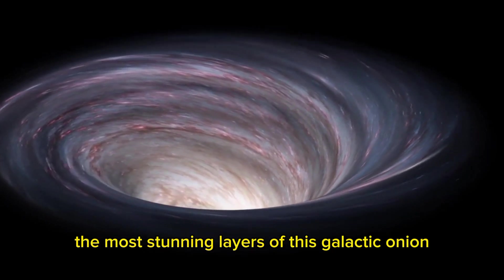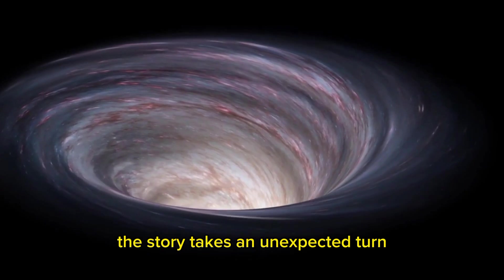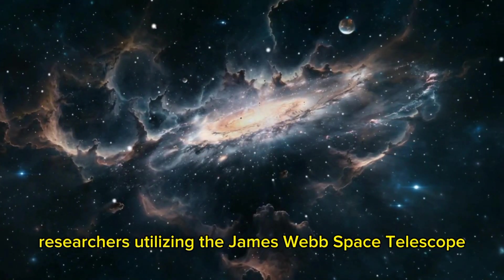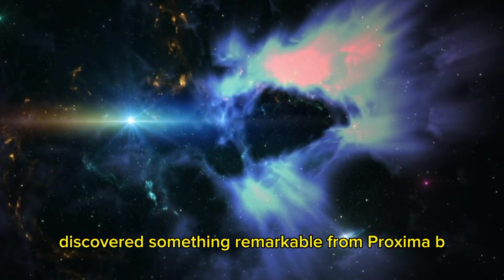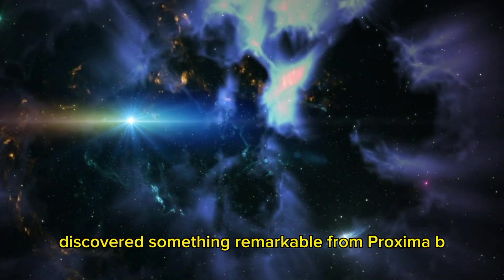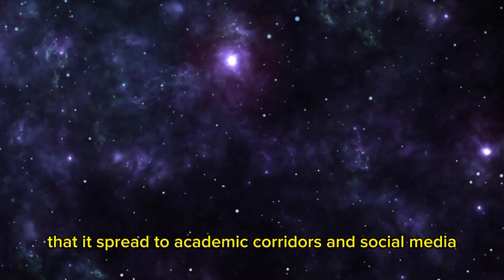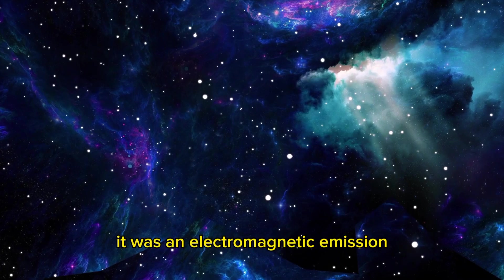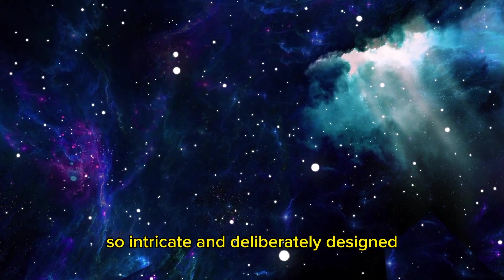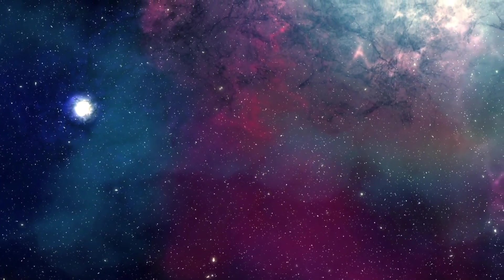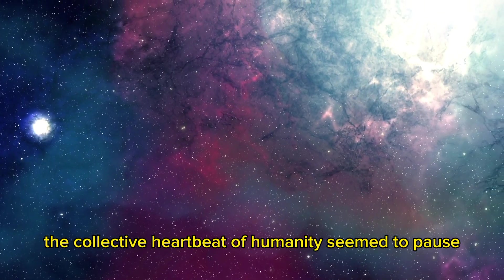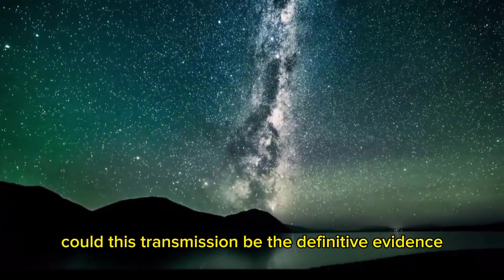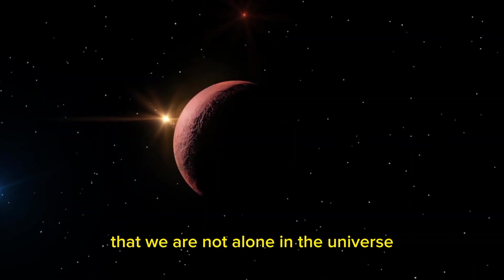Just when you thought you had uncovered the most stunning layers of this galactic onion, the story takes an unexpected turn. Much like a science fiction thriller, researchers utilizing the James Webb Space Telescope discovered something remarkable from Proxima b, a transmission so extraordinary that it spread through academic corridors and social media. Named a potential techno-signature, it was an electromagnetic emission so intricate and deliberately designed that it hinted at the presence of an advanced civilization. The collective heartbeat of humanity seemed to pause at the peak of a discovery that promised to reshape our perspective on reality. Could this transmission be the definitive evidence that we are not alone in the universe?